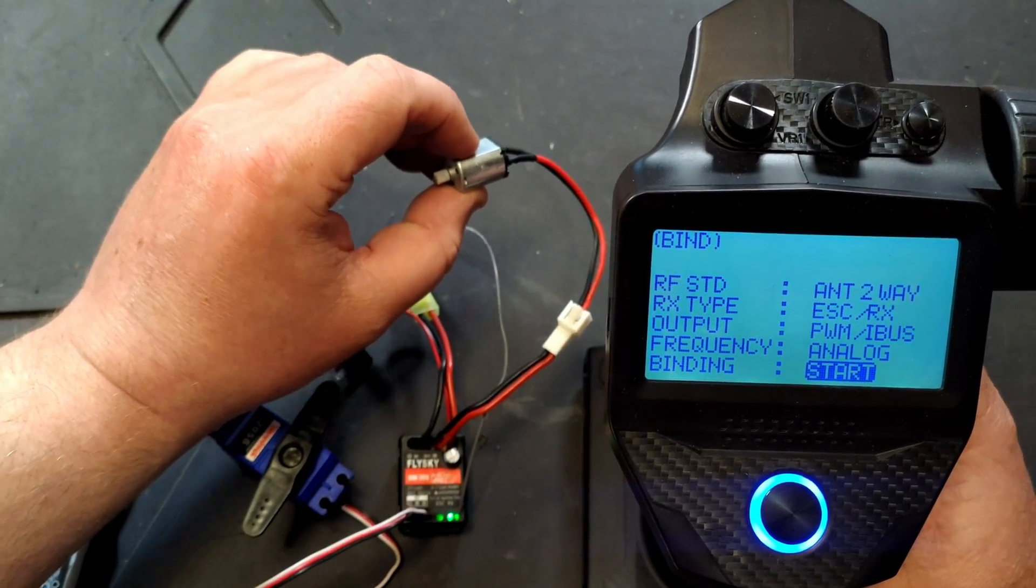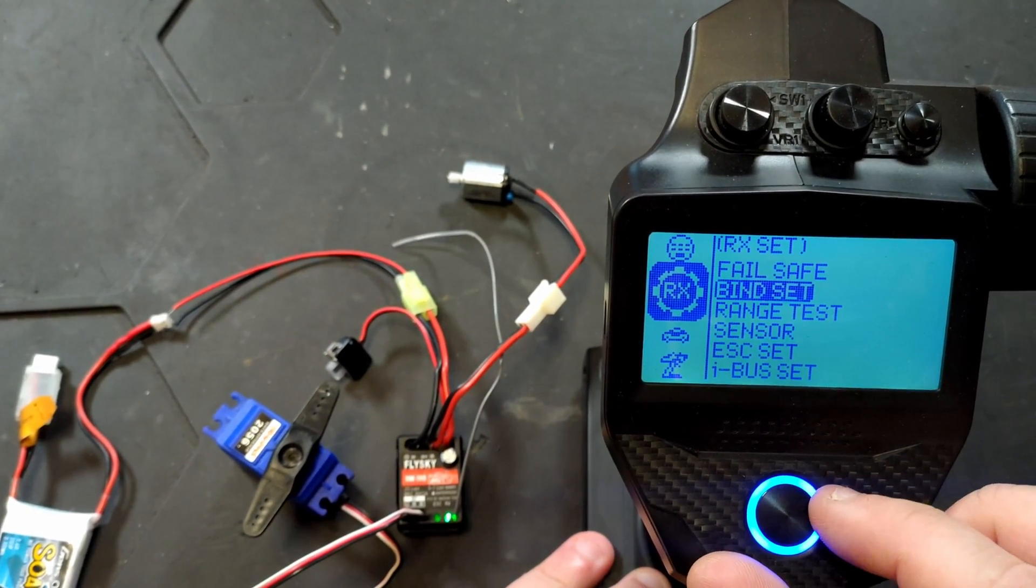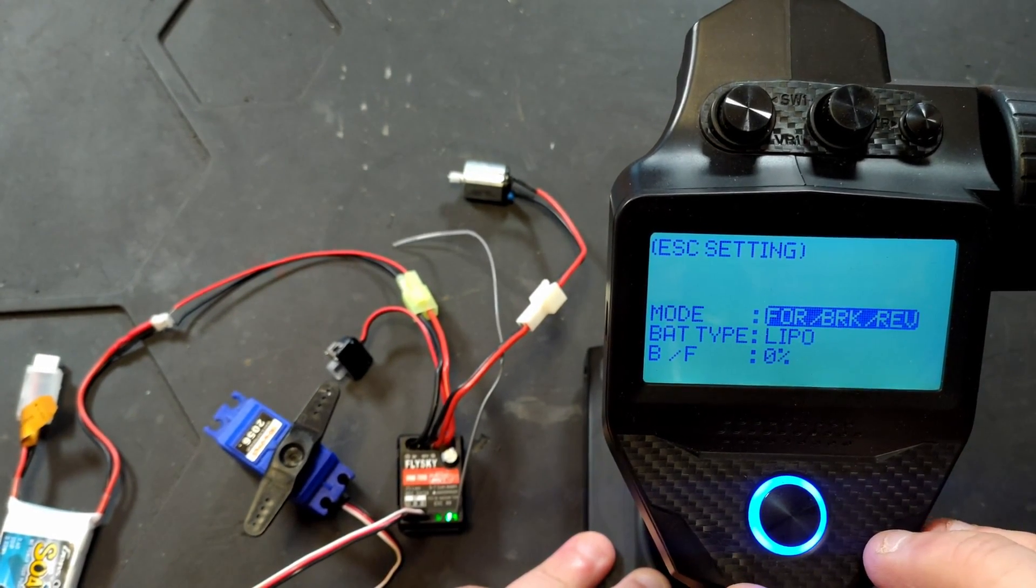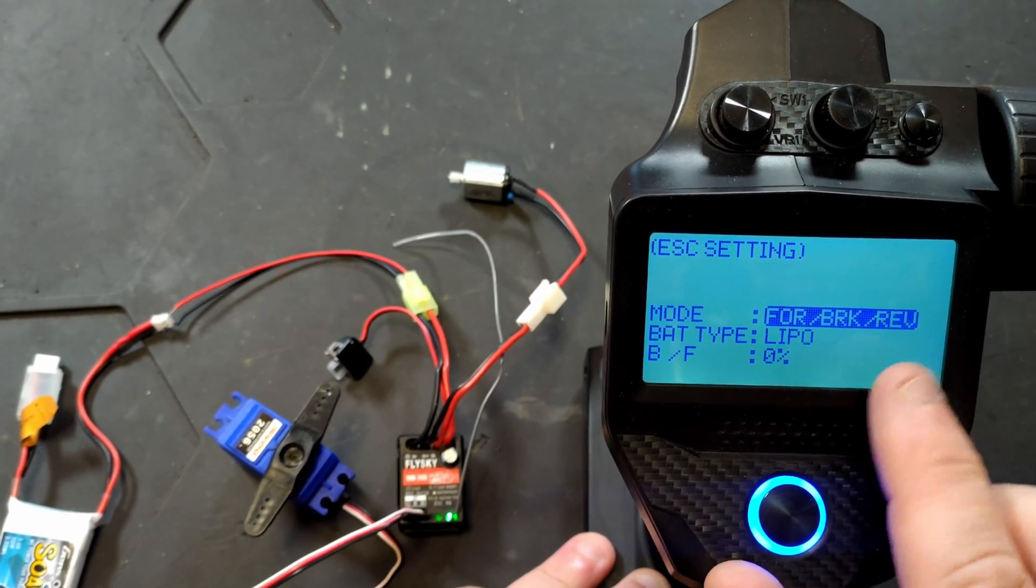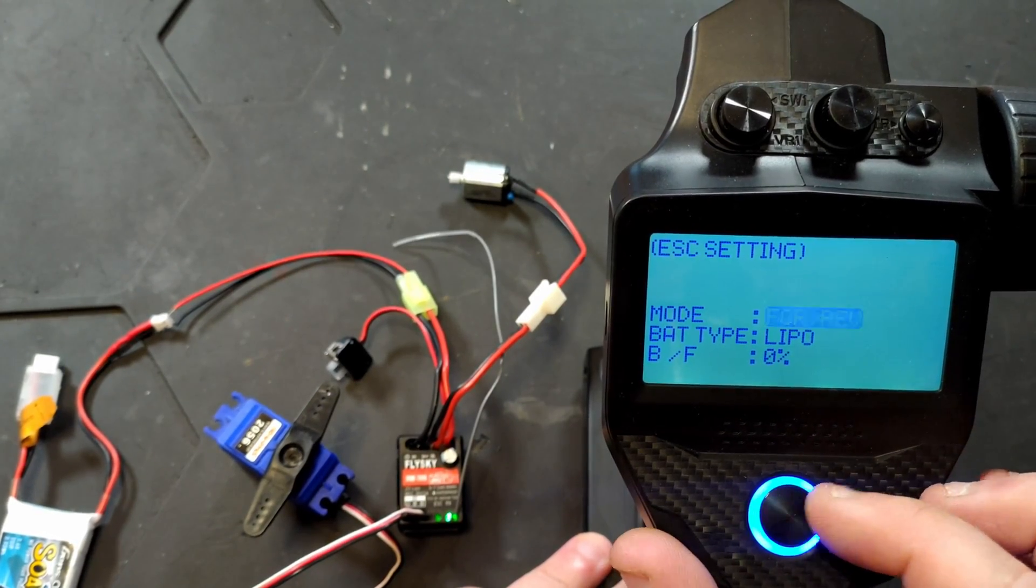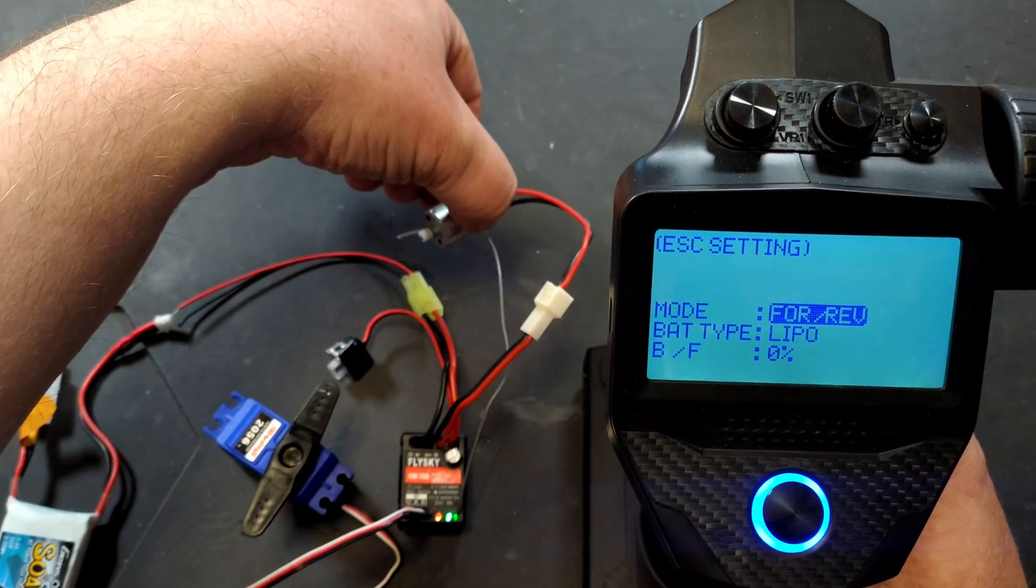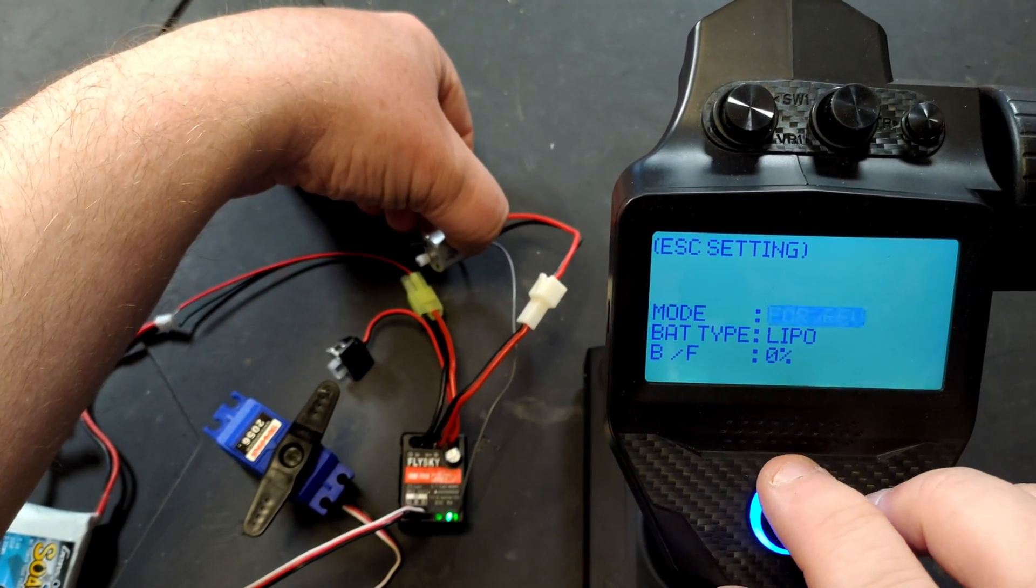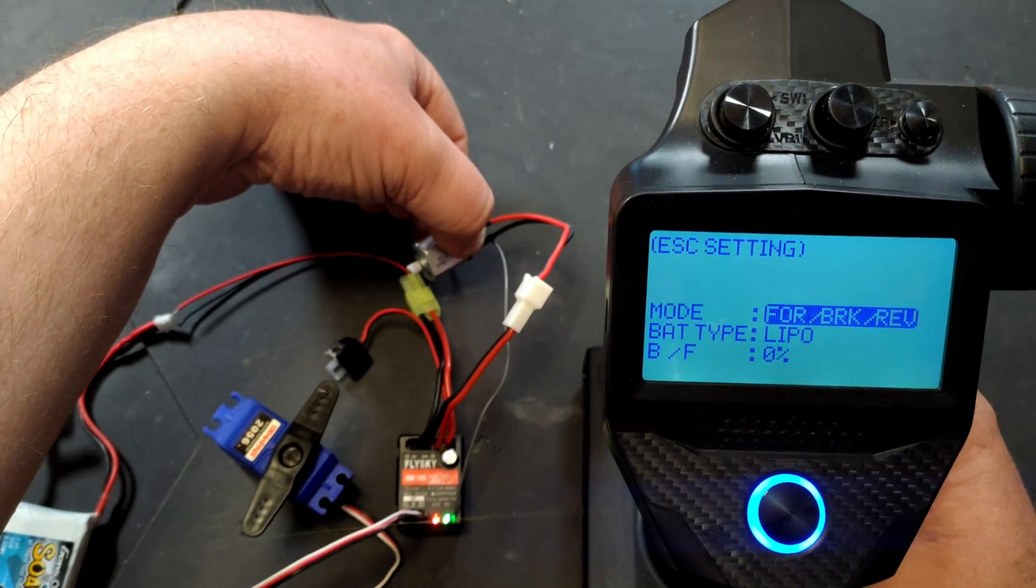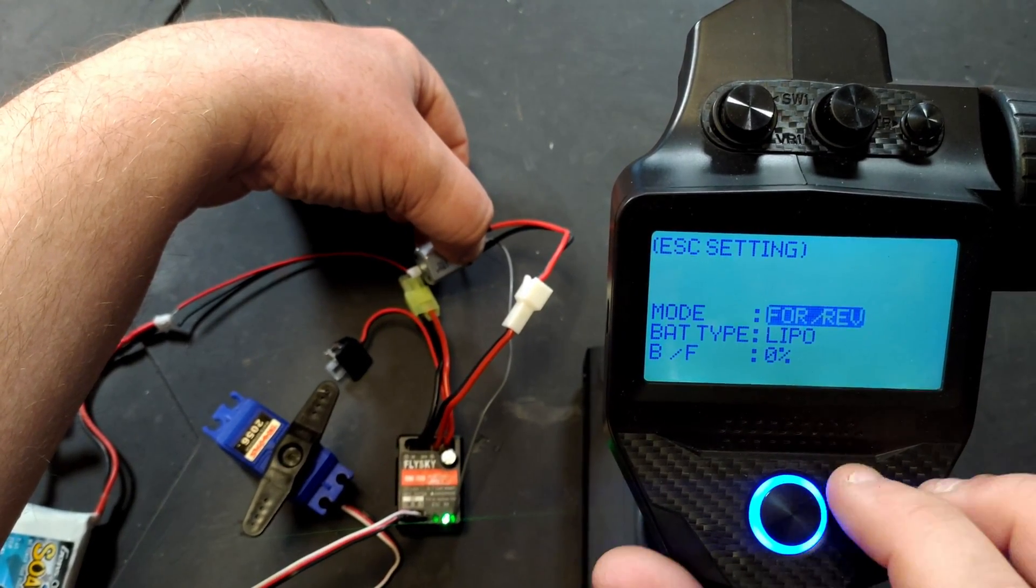So we've got forward, brake, and reverse. If we then come out of there, go down to ESC setup, we've got it set for forward brake reverse. If you wanted it in a crawler you might want to just forward and reverse, so then you've just got forward, instant reverse. Forward brake reverse will give you forward, brake, and then reverse, so let's set it for a crawler.